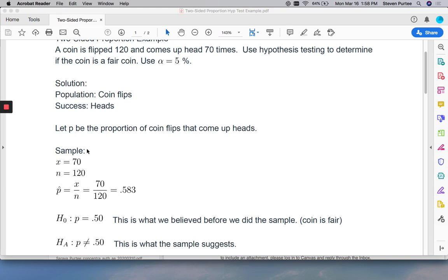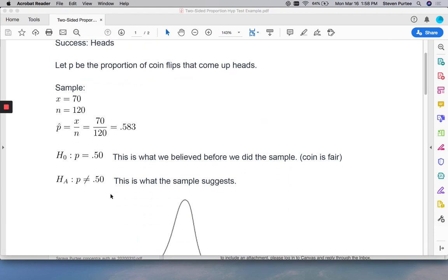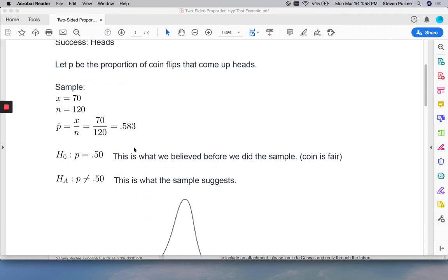We did our sample. 70 out of 120 is a 58.3% sample success rate. Then our hypotheses are, if the coin were fair, we would get a population success rate of 50%. If the coin's not fair, we won't get 50%.